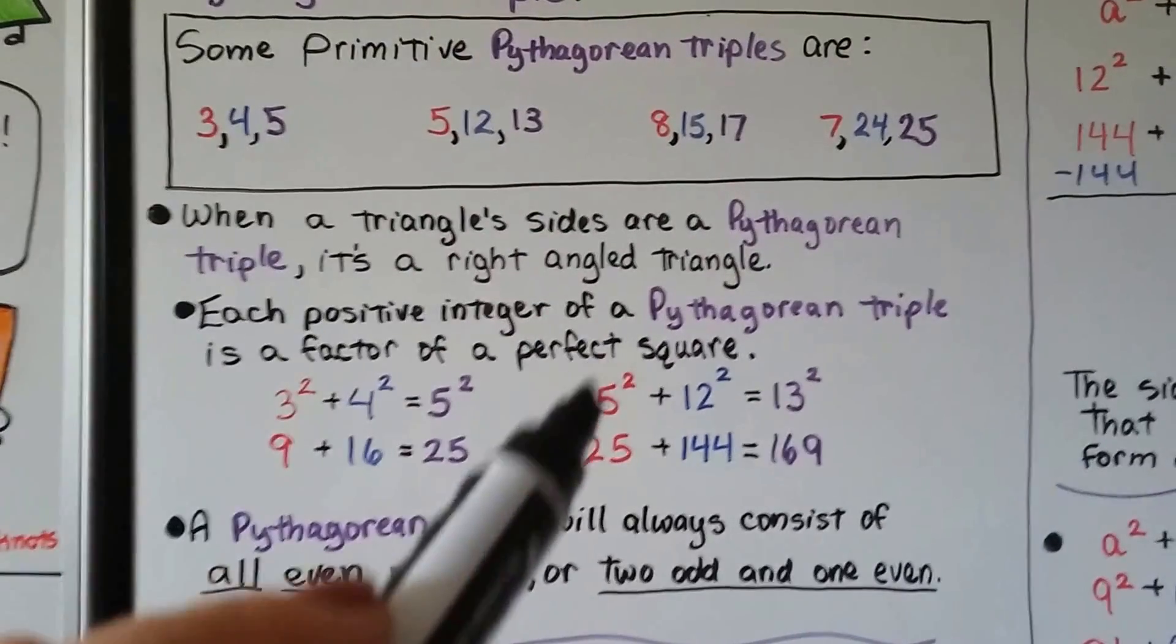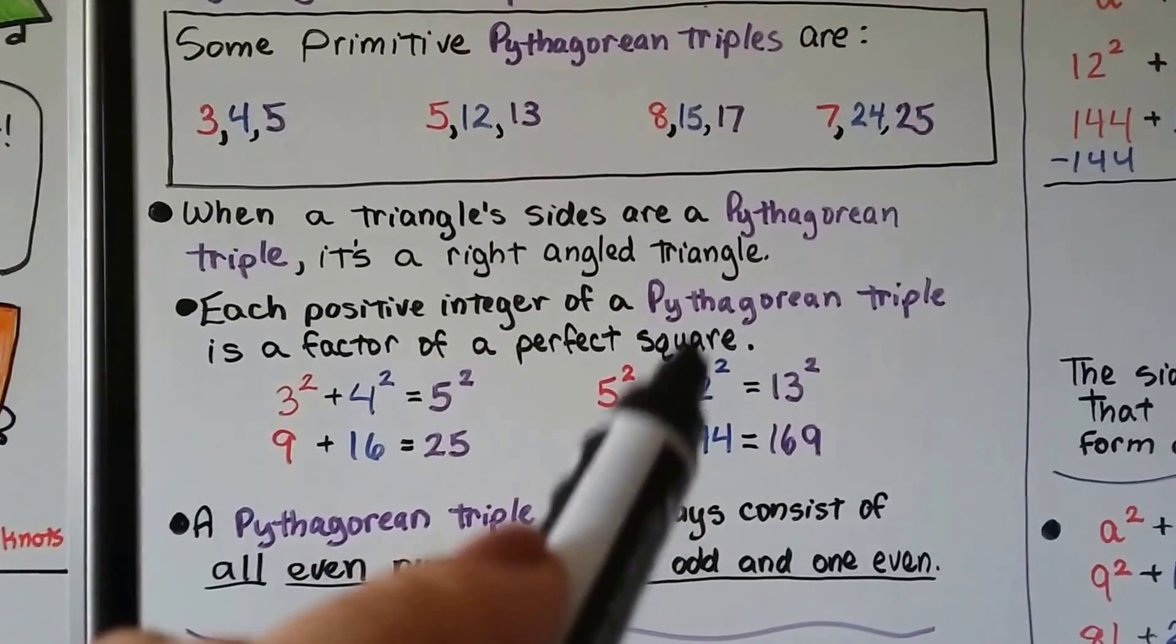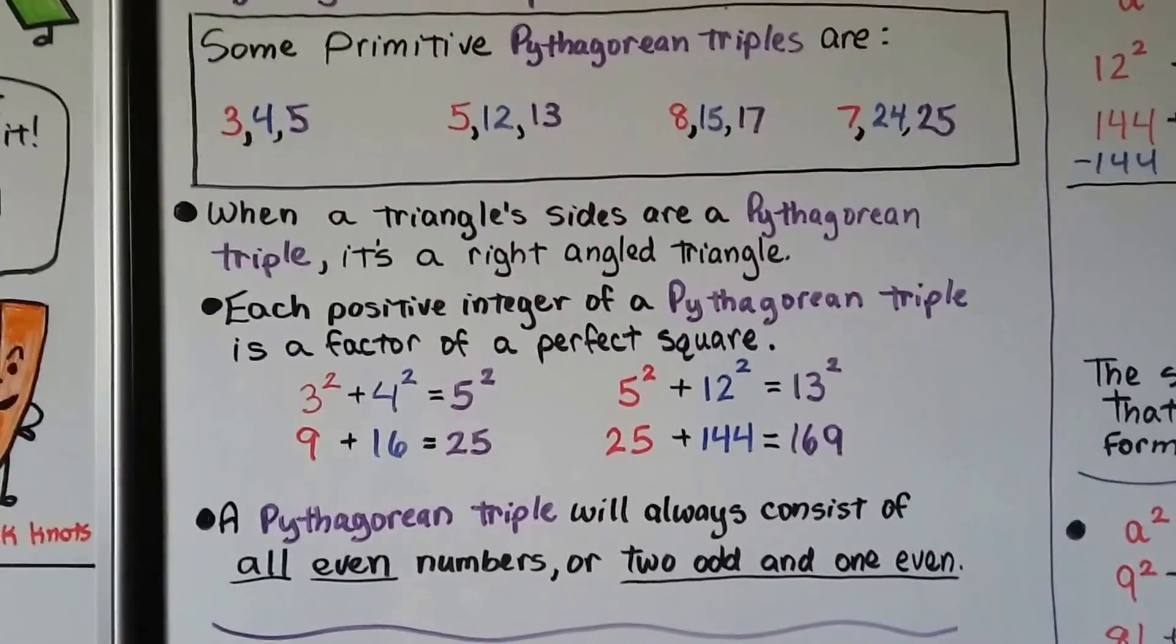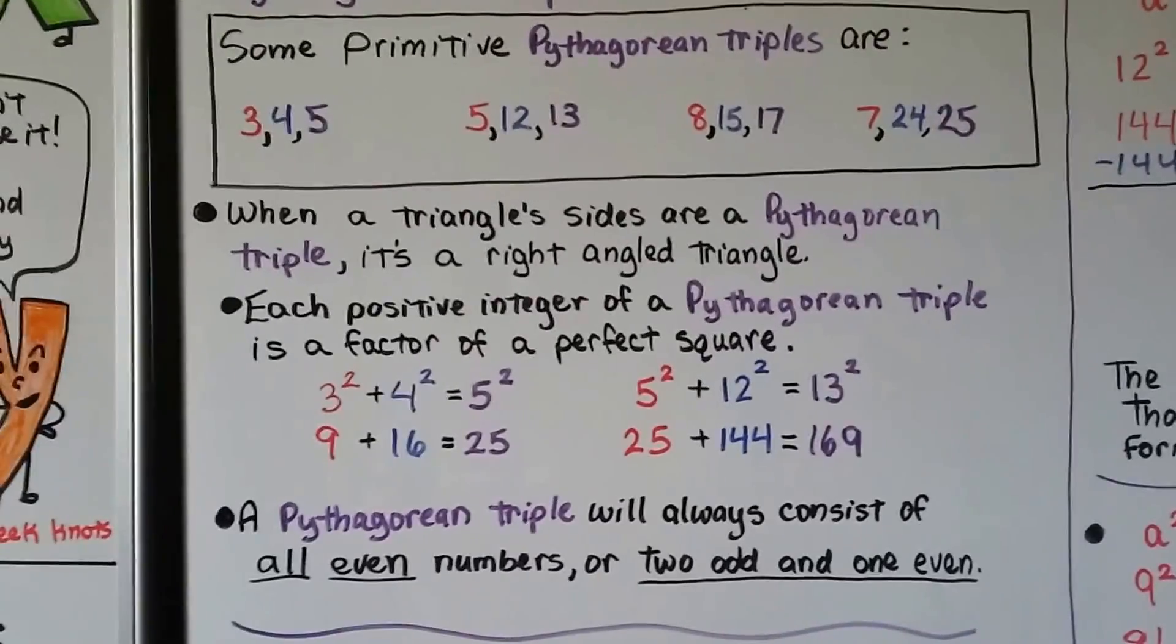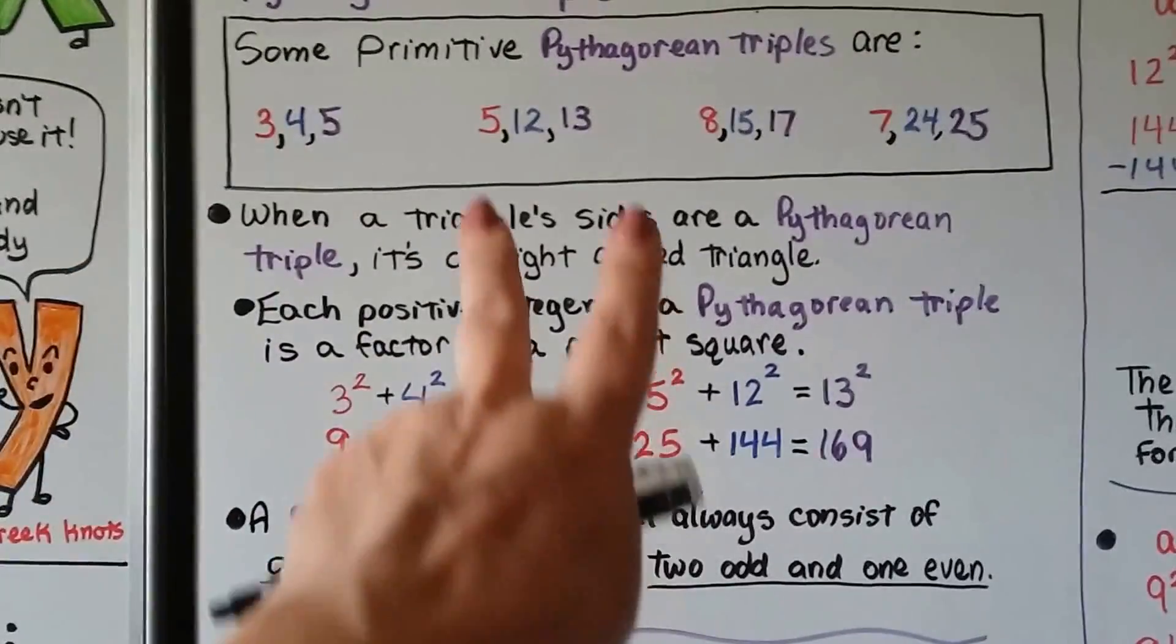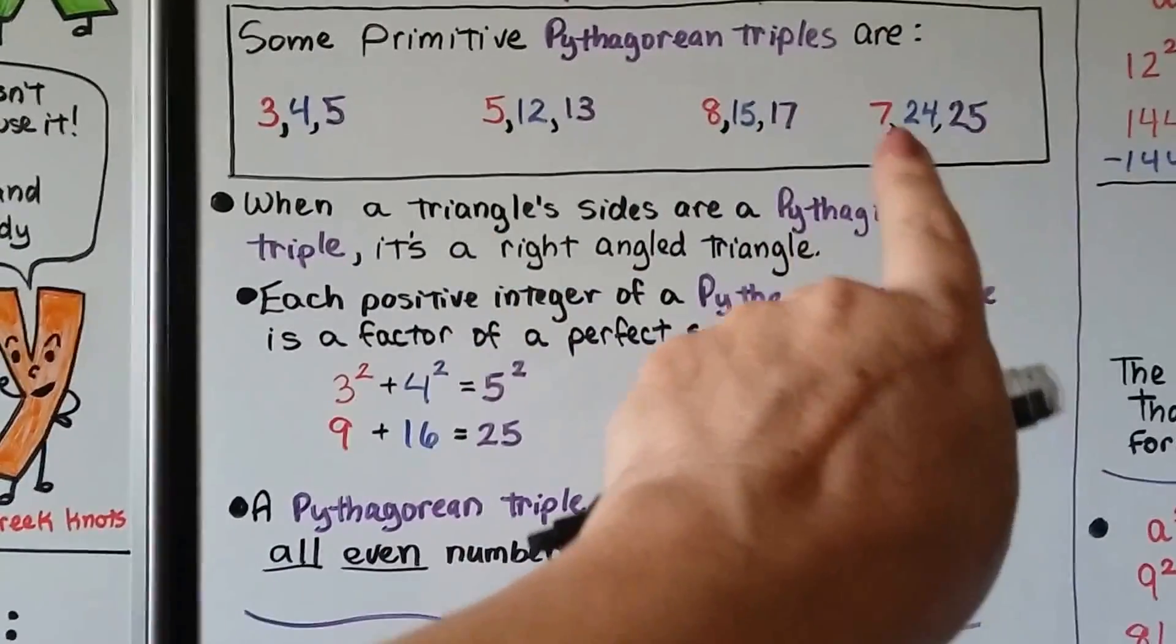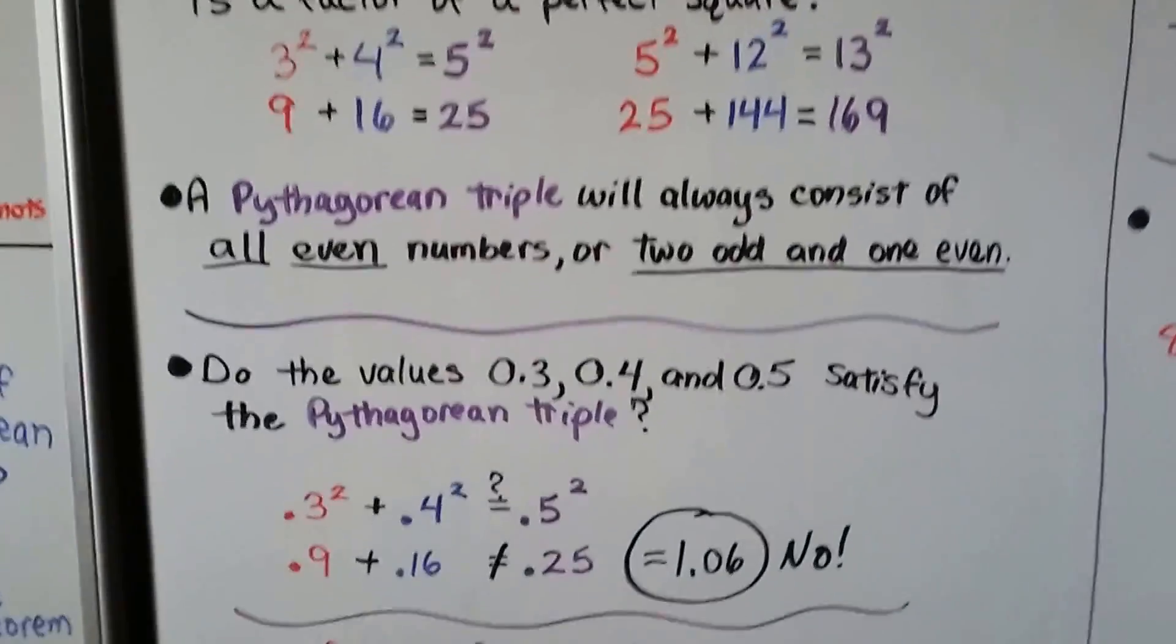For this one, we would do 5 squared plus 12 squared equals 13 squared. That would be 25 plus 144 equals 169. And that fits. And Pythagorean triple will always consist of all even numbers, or it might have two odd and one even. So here we have two odd and one even. Two odd, one even. Two odd, one even. And two odd, one even. Or, like I said, they could be all even.